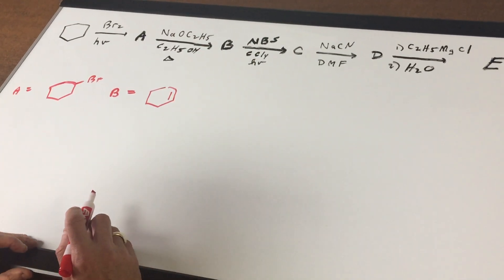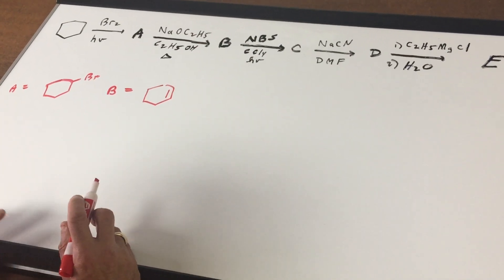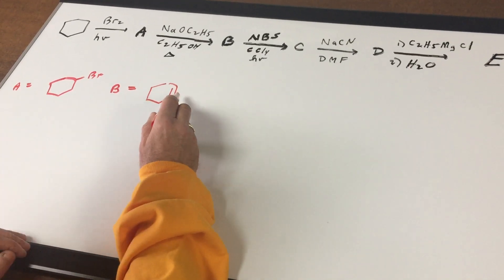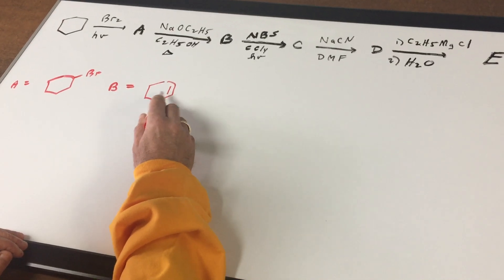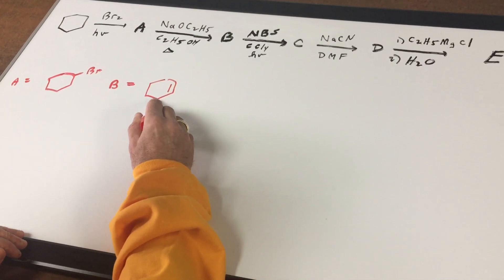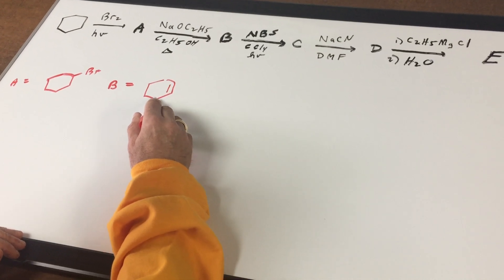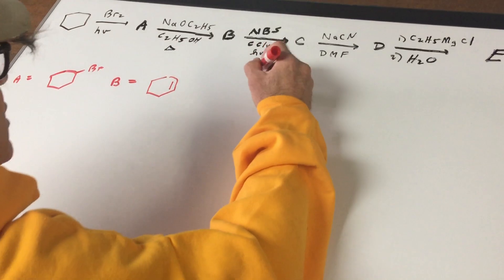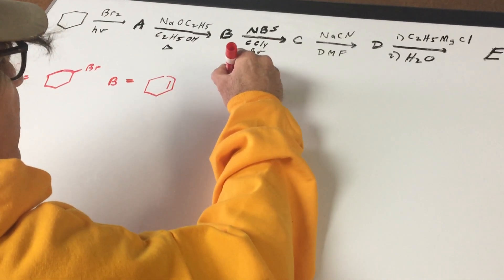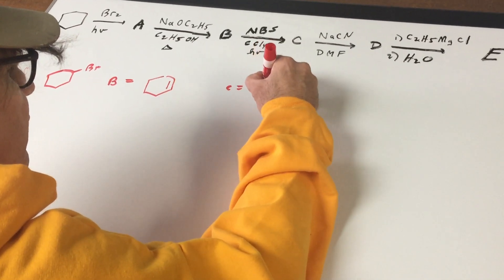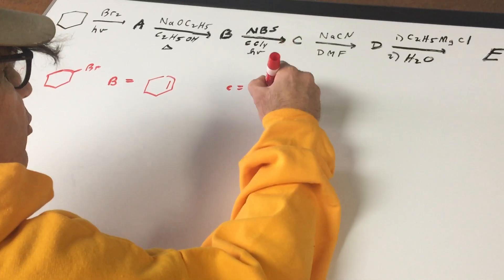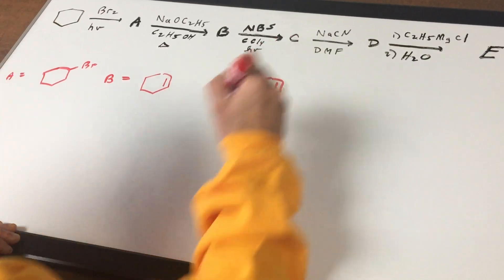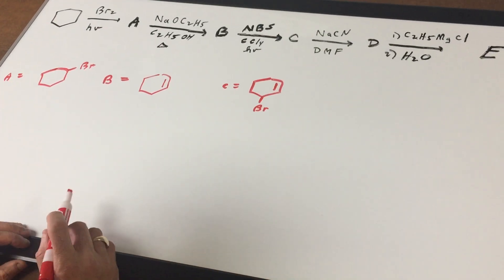From B to C, I'm going to do another radical reaction. But whenever you see an allylic or a benzylic compound, you would always replace the benzylic hydrogen or the allylic. Here it's an allylic with a Br. So as you can see for letter C, that would be this. You replace it with the halogen. So I've done an allylic substitution.